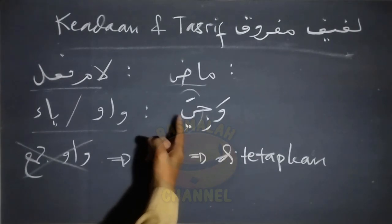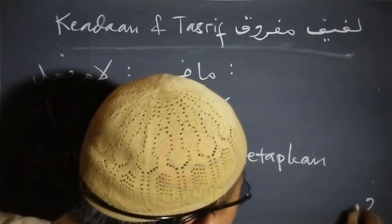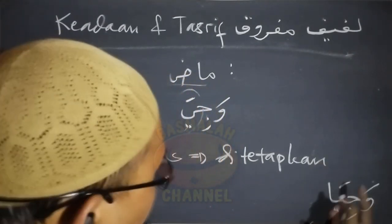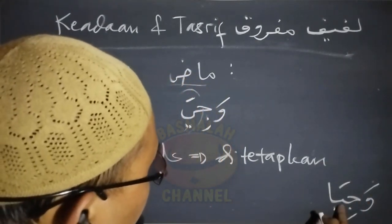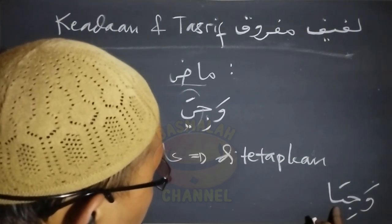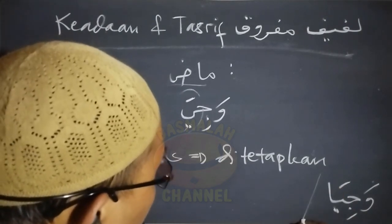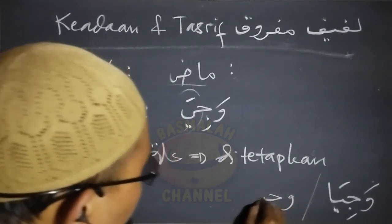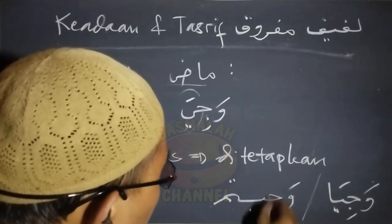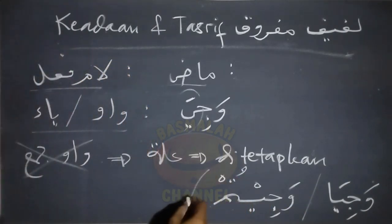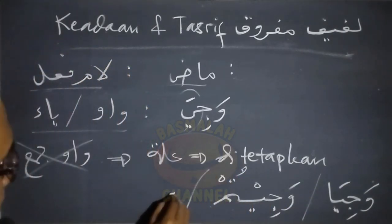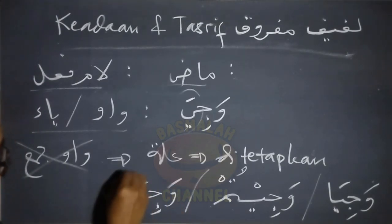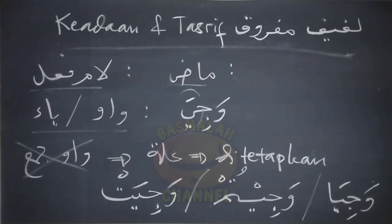Contohnya seperti lafad wajia, manakala bersambung dengan alif tathniah maka akan menjadi wajia, ya' yang ada pada lam fi'il di sini ditetapkan, tidak dibuang dan tidak dirubah bentuknya menjadi huruf ilat yang lain. Atau bersambung dengan damir rafa' mutaharrik menjadi wajitum. Atau bersambung dengan ta' ta'nis maka akan menjadi wajiat. Ini semuanya adalah keadaan lam fi'il manakala berbentuk fi'il madi.